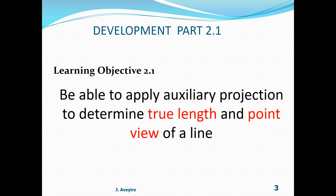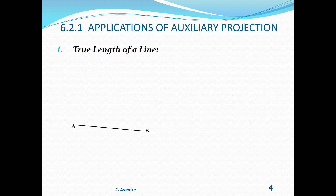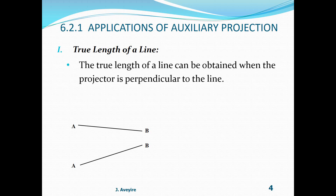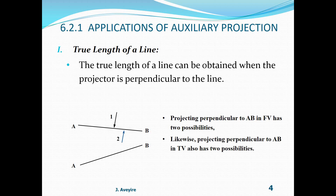True length of a line. Here we have two views — the front view on top and the top view beneath. The true length of a line can be determined when the projector is projected perpendicular to the line. For the front view, projecting perpendicular to AB has two possibilities. Likewise, projecting perpendicular to AB in the top view also has two possibilities, giving us four possibilities in total.